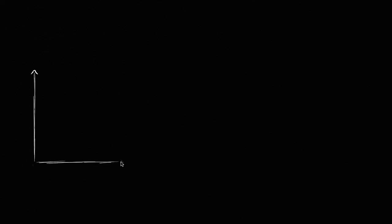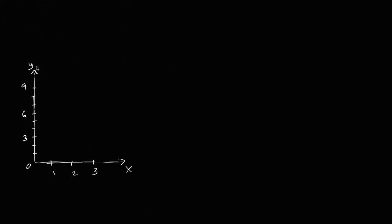So we already have a lot of experience graphing things, but let's review a little bit. Let me draw some axes here. So that's my y-axis, and then this is my x-axis. I'll just label it a little bit. So let's say x equals one, two, three. And on this axis I'm going to go up to nine. So one, two, three, four, five, six, seven, eight, nine. I just labeled all the multiples of three. That's fairly standard — at least the first quadrant of the coordinate plane.